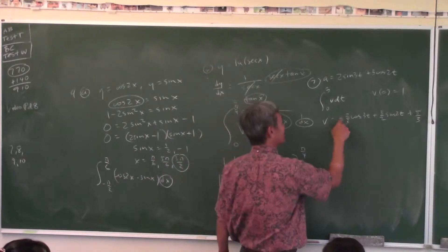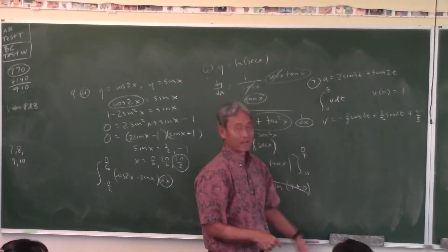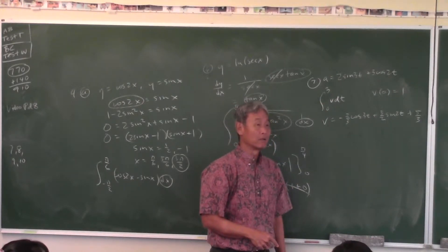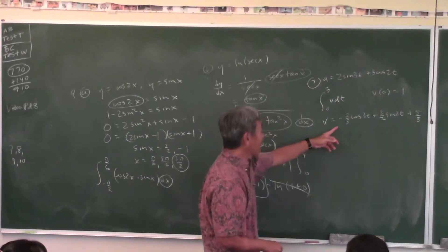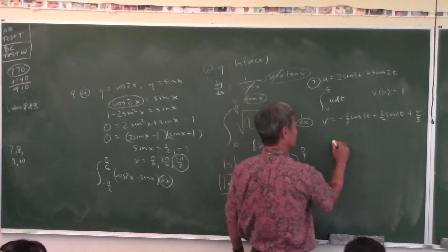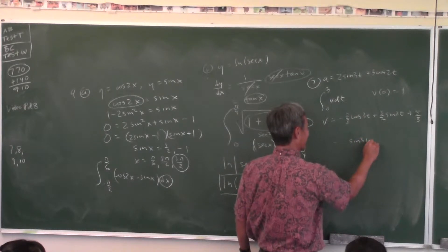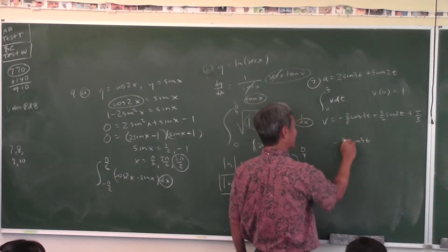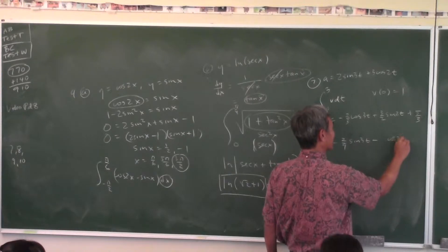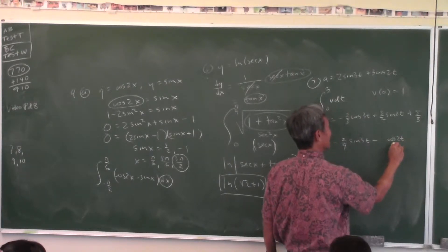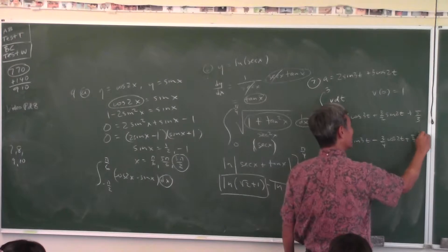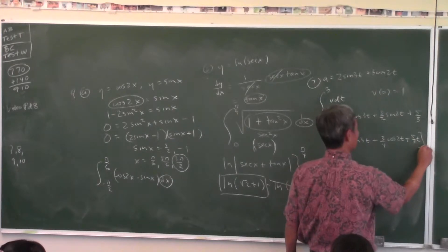So I have to integrate this from zero to three. You find the antiderivative, which — is it just negative sine 3p? No, I left the space for the two-ninths. What's the antiderivative of that? Is it just negative cosine 2p? No — three-fourths. Plus five-thirds t, from zero to three.